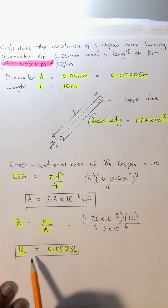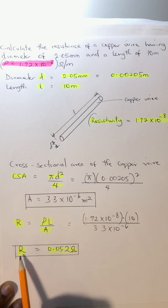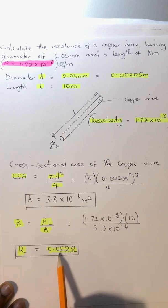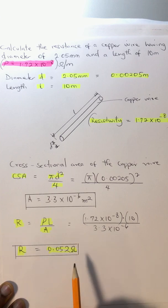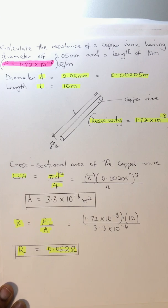Then we have our resistance, which equals 0.052 ohms. So our resistance equals 0.052 ohms. Thank you very much.